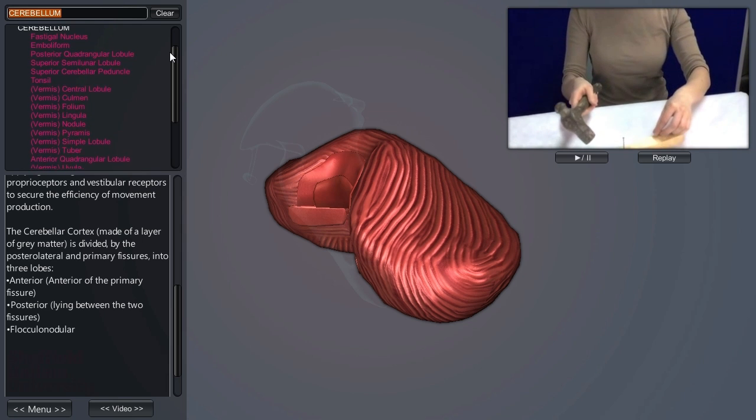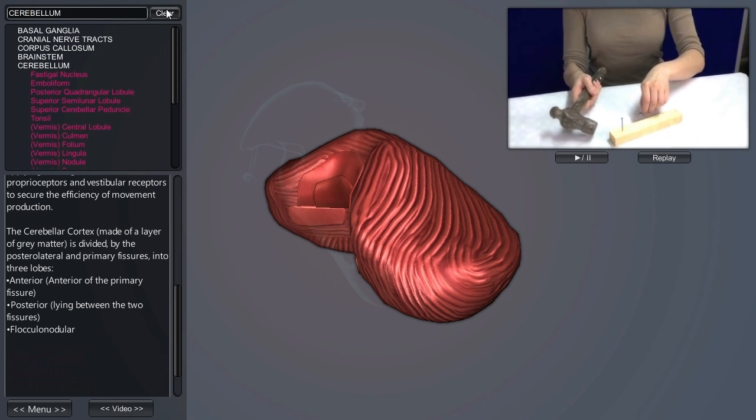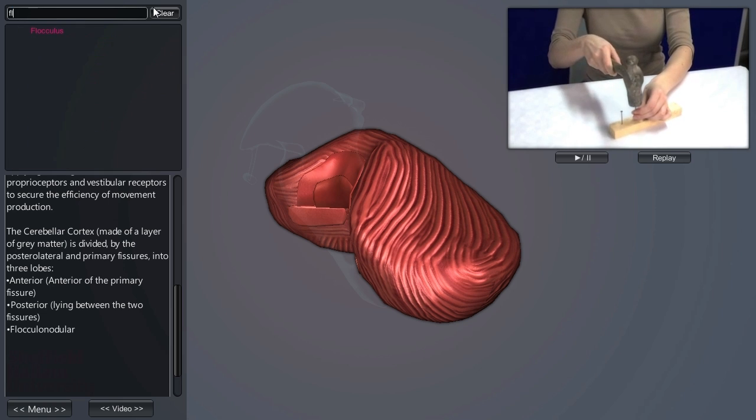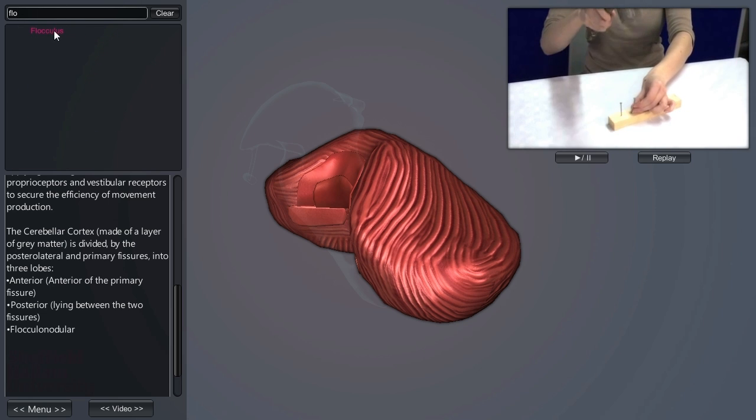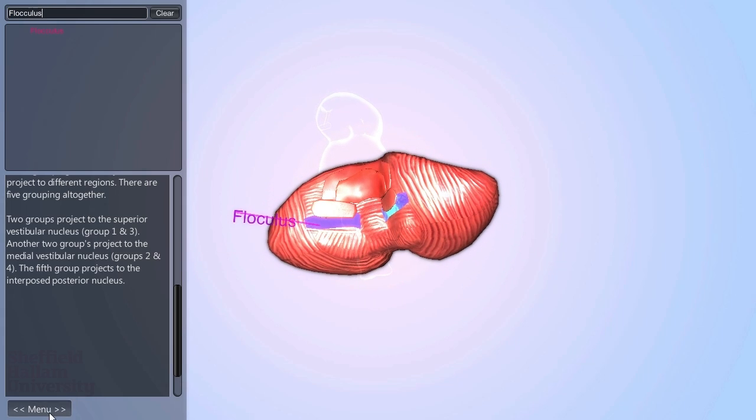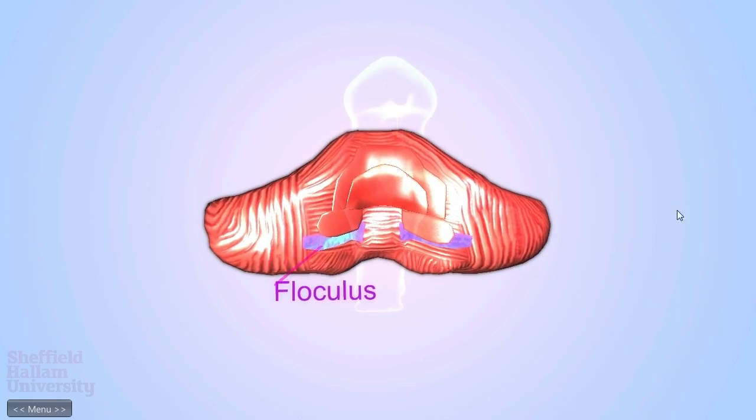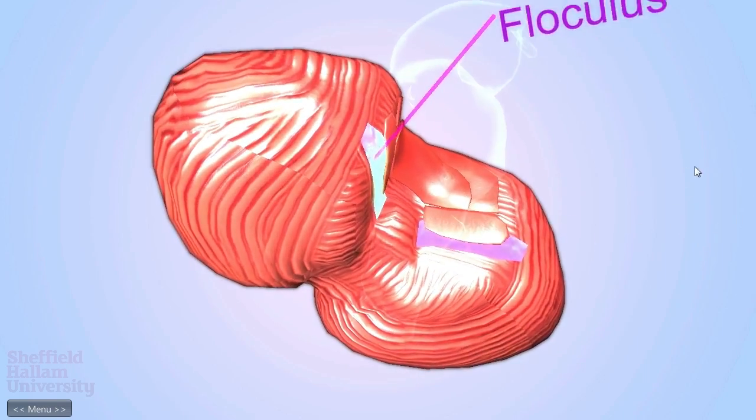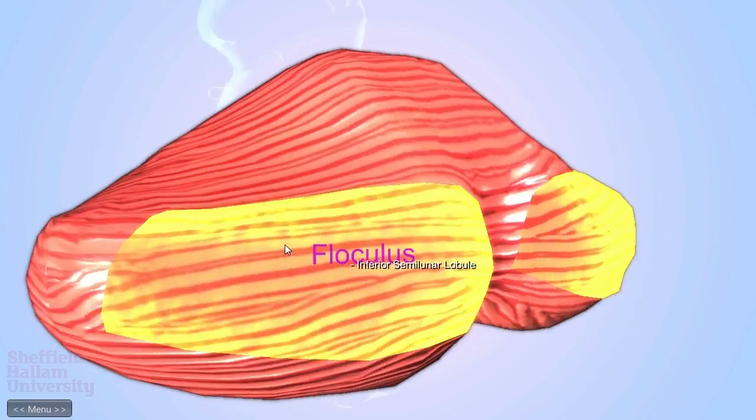Here is an example of a task which requires both motor planning and fine motor control. This involves the spino-cerebellar function within the flocculus. The flocculus is the name given to the extremity ends running from the flocculonodular lobe.